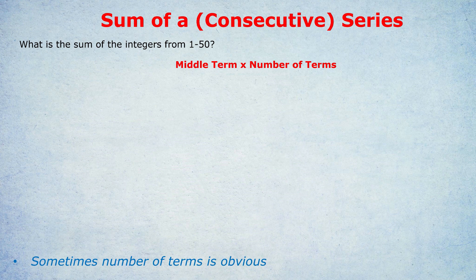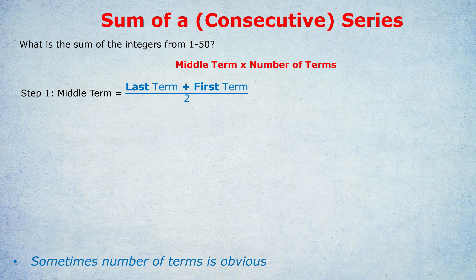We're going to pretend that every single term is the middle term. So once we found the middle term, we just multiply it by the number of terms. How do we find the middle term? To find the middle term in any series, no matter what it's going up by, you do the